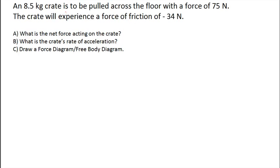Okay guys, this example on an 8.5 kilogram crate is to be pulled across the floor with a force of 75 newtons. The crate will experience a force of friction of negative 34 newtons. So we're pulling the crate rightward with a force of 75 newtons and the crate will experience a force of friction of negative 34 newtons.